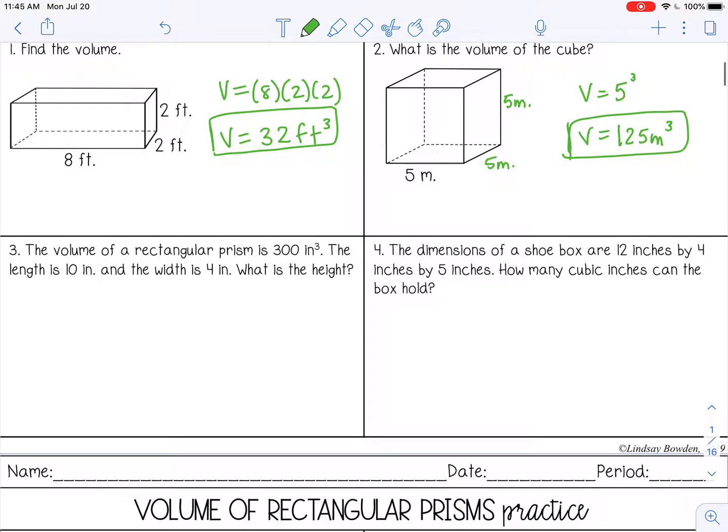All right, and number three, the volume of a rectangular prism is 300 inches cubed. The length is 10 and the width is four. What is the height? So this one we're actually working backwards. So my volume is 300, my length is 10, my width is four, and we're trying to find the height.